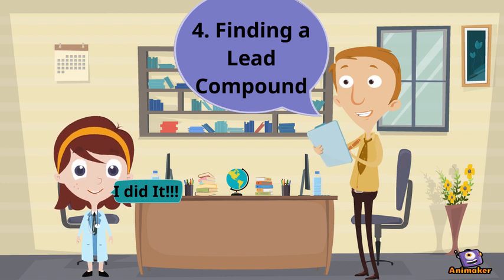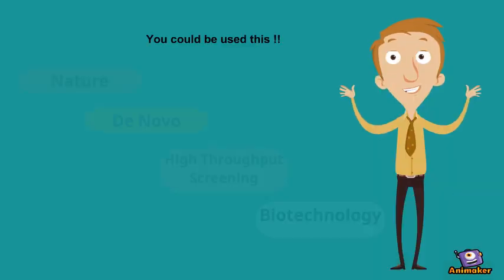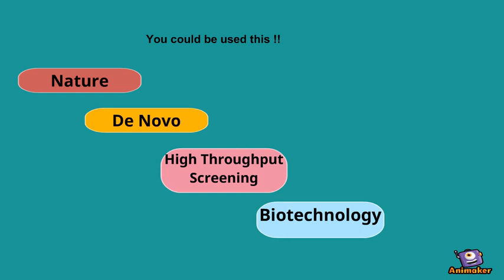To begin looking for a drug, they search for a molecule or lead compound that may act on their target to alter the disease course. If successful over long odds and years of testing, the lead compound can ultimately become a new medicine.